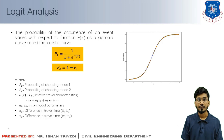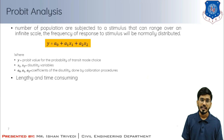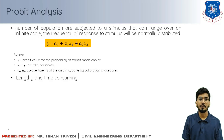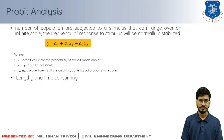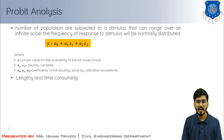Probit analysis is based on the principle that if a number of populations are subjected to a stimulus that can range over an infinite scale, the frequency of response to these stimuli will be normally distributed. The probit equation is: y = a₀ + a₁X₁ + a₂X₂. Here y is the probit value for the probability of transit mode choice; X₁ and X₂ are disutility variables; a₀, a₁, a₂ are coefficients of disutility determined by the calibration procedure. This method is lengthy and time consuming.